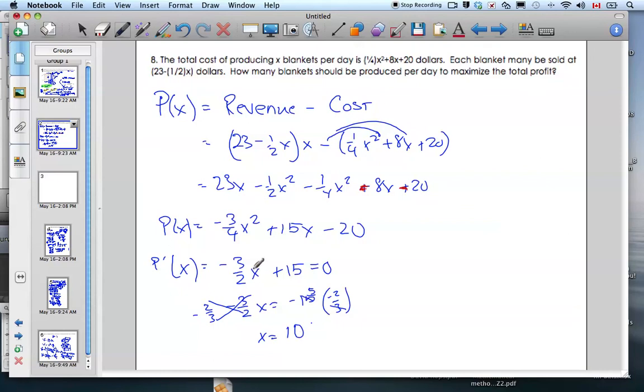Now I should check to see if it's a maximum. There are two ways I can do it. I could do the first derivative test, where I look at the signs. If I plug in a value, say one, I'm going to get a positive value, which means it's increasing. If I put a value like a hundred, this will be a large negative value, so it's negative and going down—that's a maximum. That's one way.